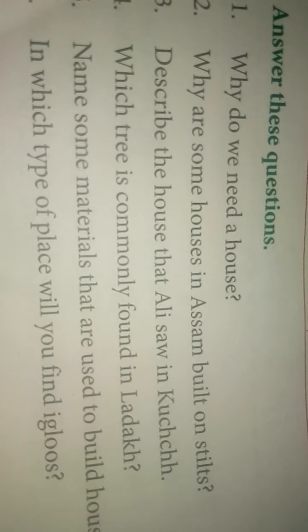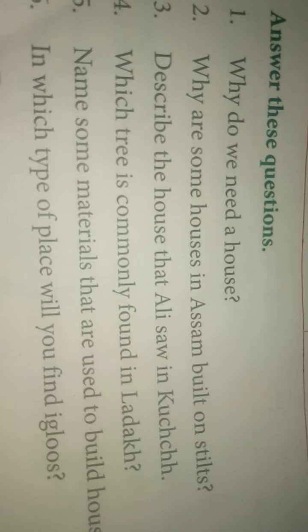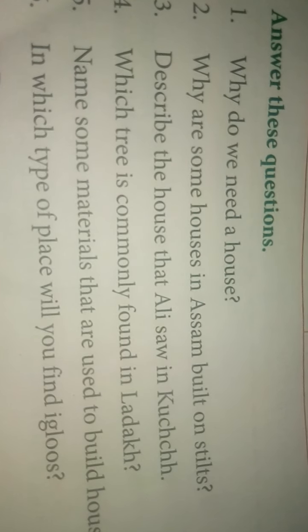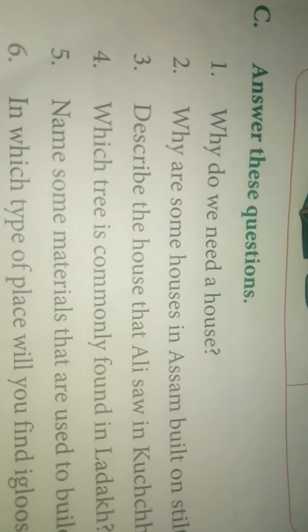Number 3. Describe the house that Ali saw in Kach. The houses that Ali saw in Kach were round with a thatched roof. They were made of mud and bamboo.